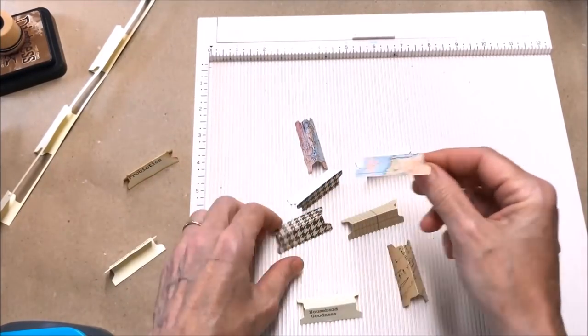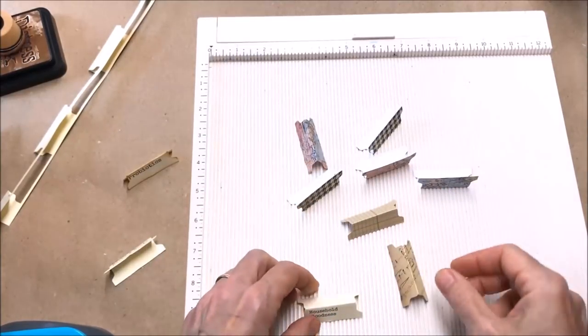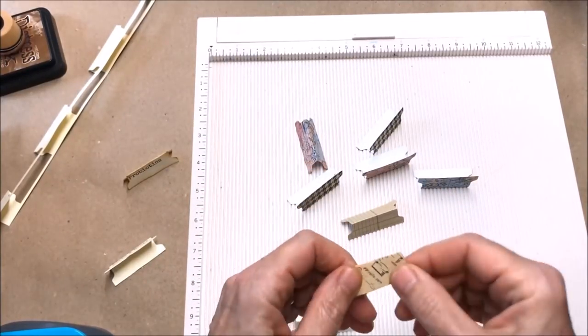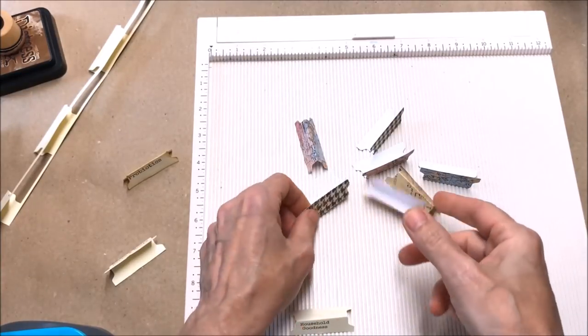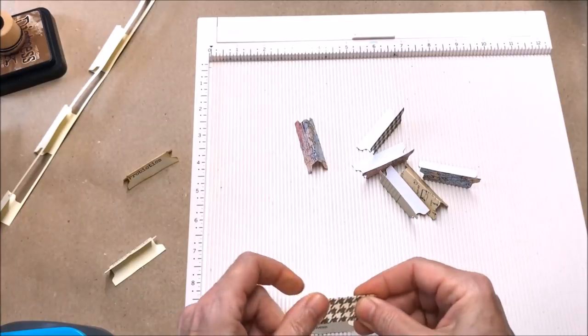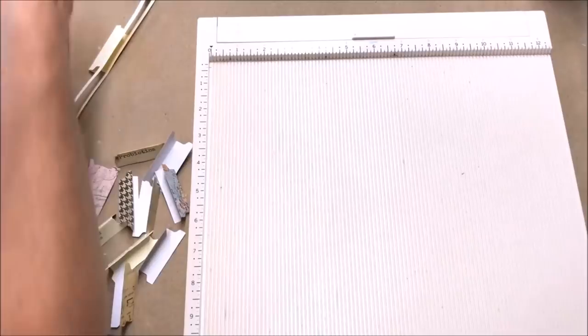You can also use printed paper, great to use cardstock scraps, colored map paper, there's some more houndstooth that I had used for my Sherlock journal, music paper, and put your own words or whatever on there.